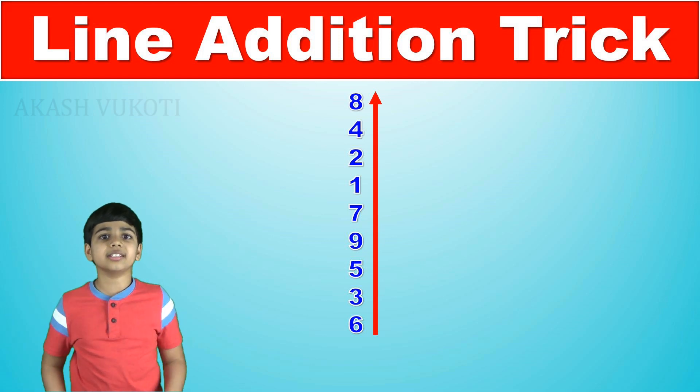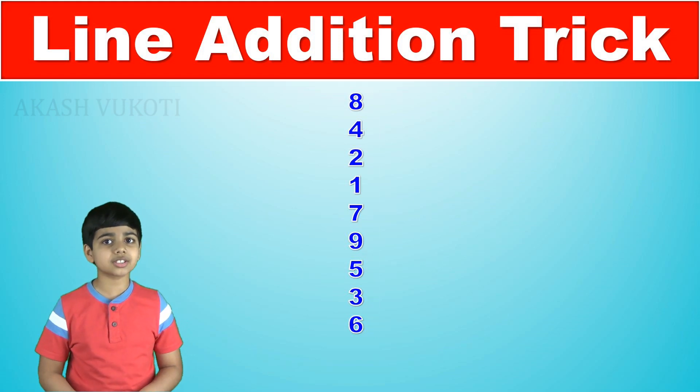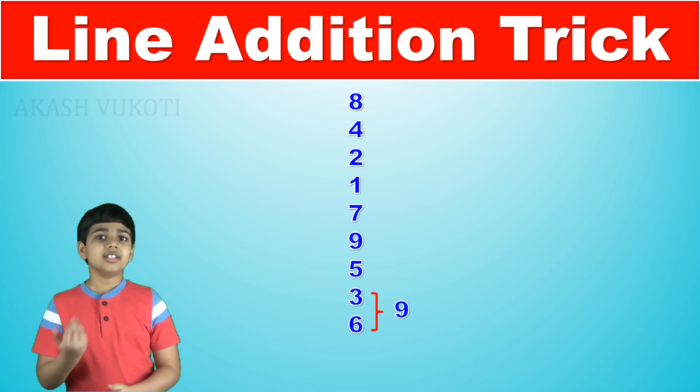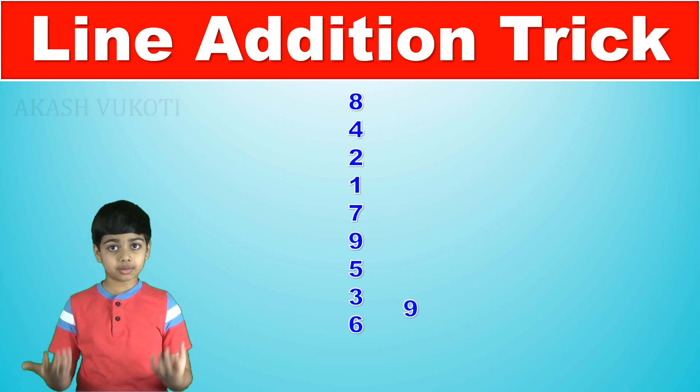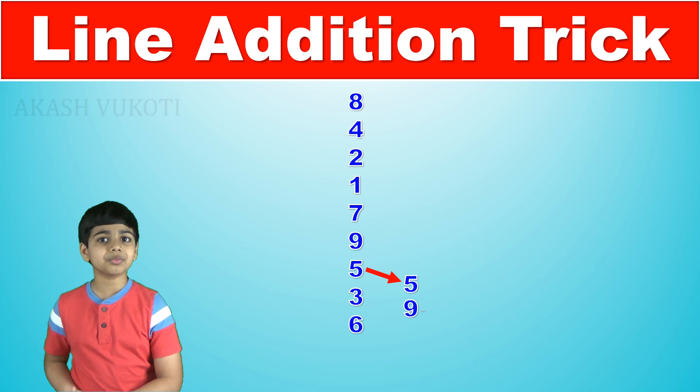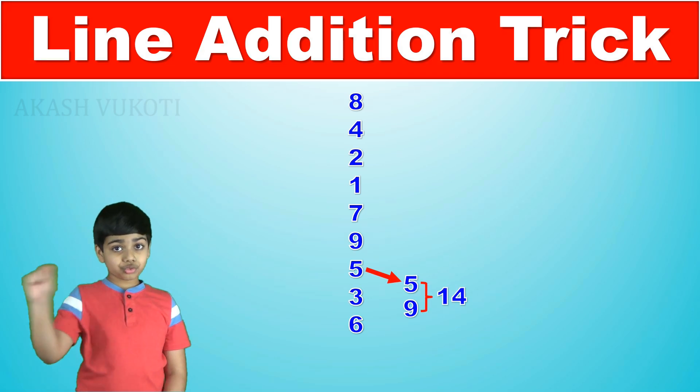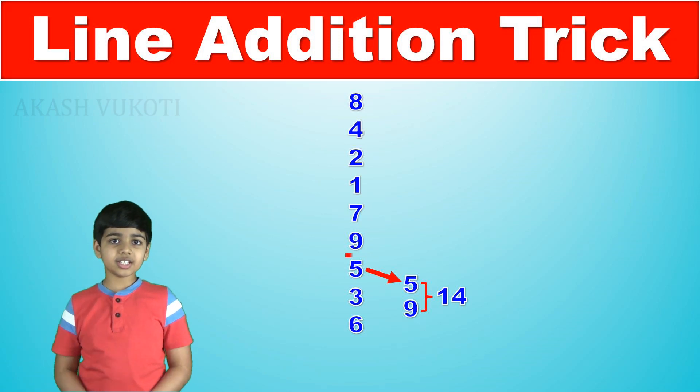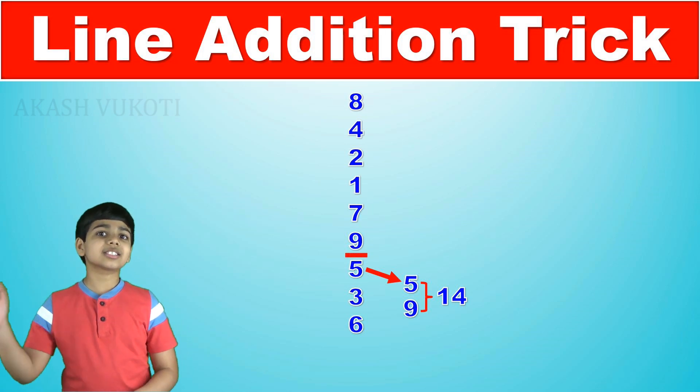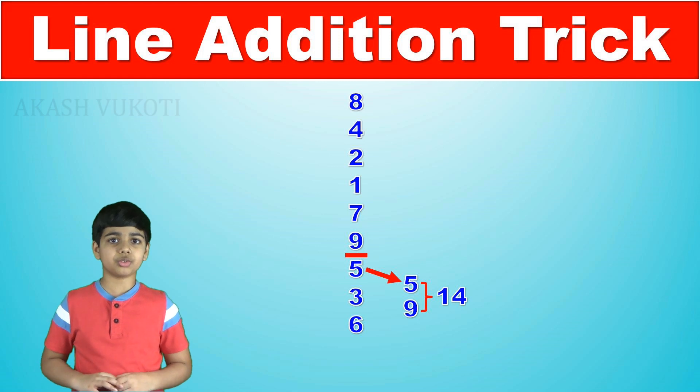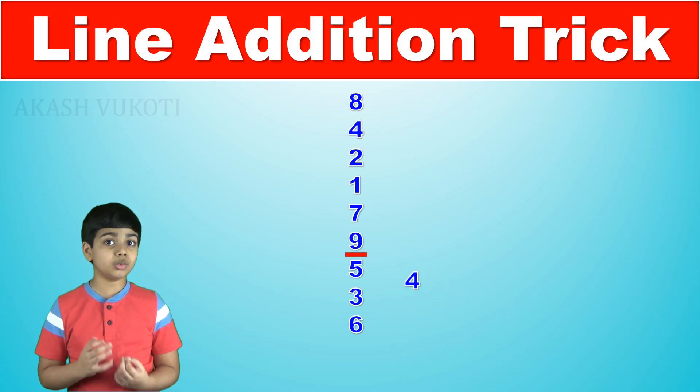We start from bottom to top which means the first number is 6. 6 plus the next number in the list, 3, is 9 and then 9 plus 5, the next number is 14. Is 14 higher than 10? Yes, so drop a 10 there by drawing a line there and then subtract 10 from 14 which is our total. We get 4 so we can continue.